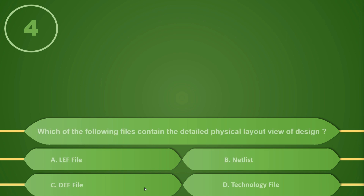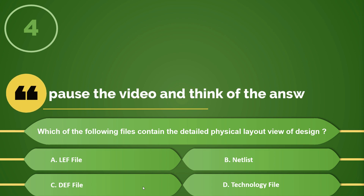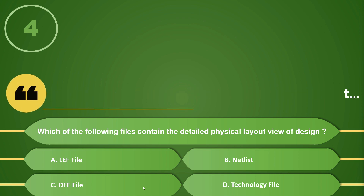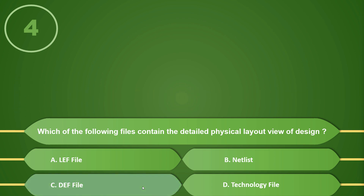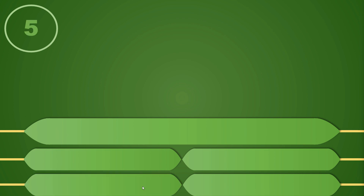The fourth question is: Which of the following files contains the detailed physical layout view of the design? Options: A) LEF file, B) Netlist, C) DEF file, or D) Technology file. Please note that we are asking about the detailed physical layout view here. If your answer is C, DEF file, then you are correct.